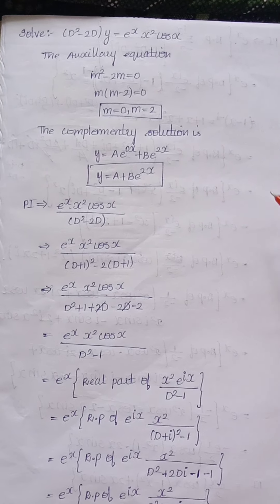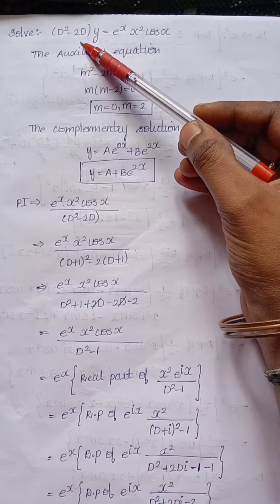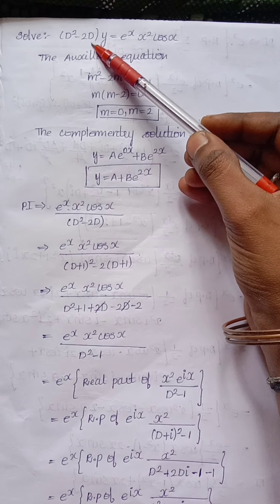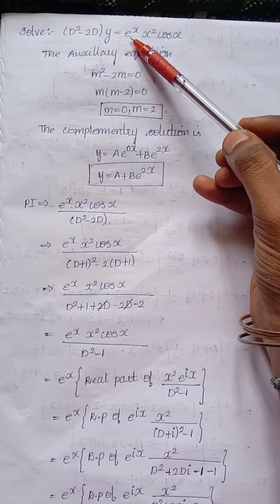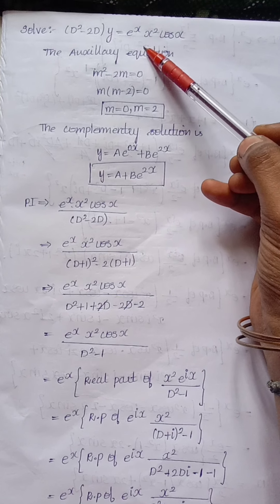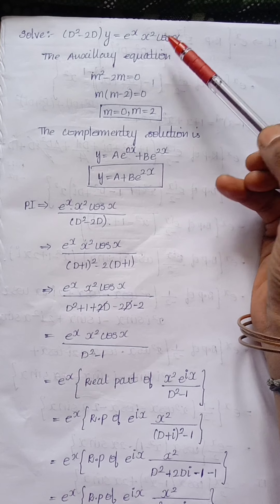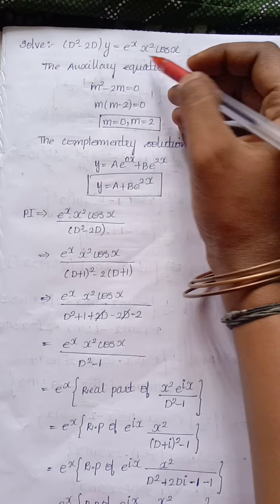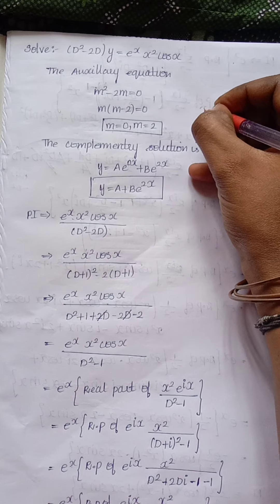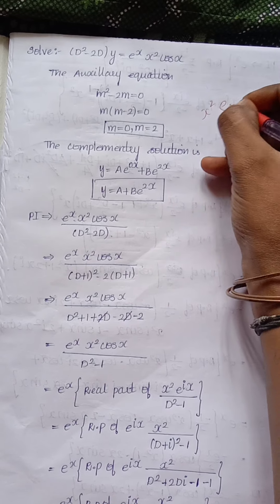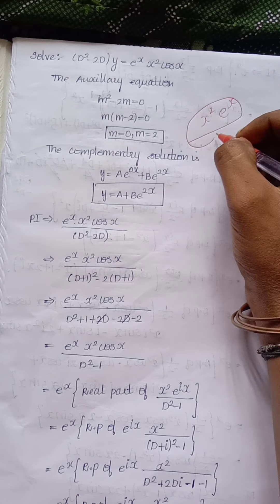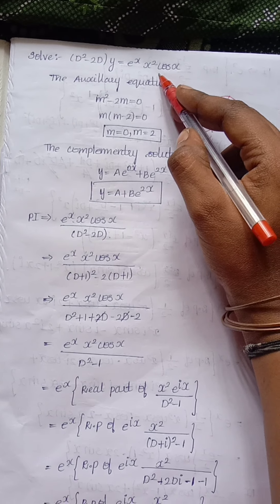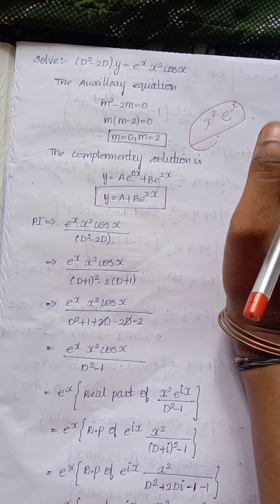Today's question is D squared minus 2D times y equals e^x times x squared times cos x. Both x squared terms and e^x terms are given in the question, so let's look at how to solve this.